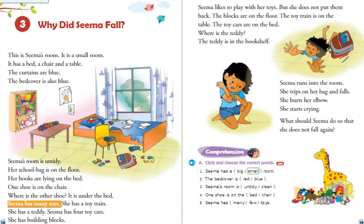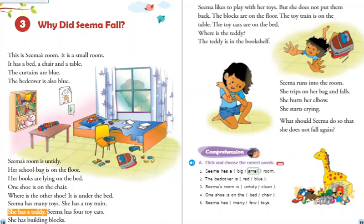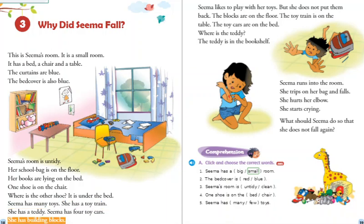Seema has many toys. She has a toy train. She has a teddy. Seema has four toy cars. She has building blocks.